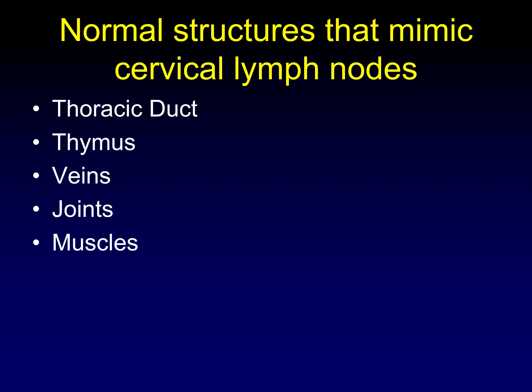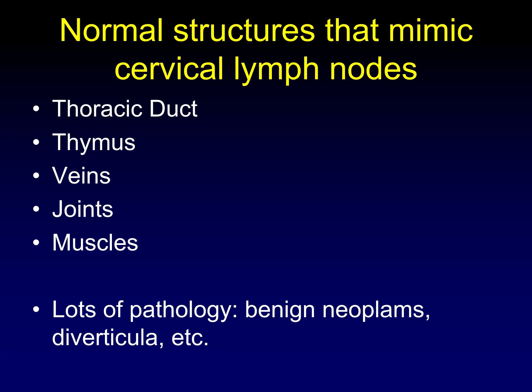To summarize, normal structures that can mimic cervical lymph nodes include: a dilated distal thoracic duct, visible in 50% of neck CTs; cervical thymus, which extends into the neck and can persist throughout adult life; veins, which are unpredictable and can crop up in unusual locations; degenerated joints, specifically the sternoclavicular joint; and muscles, particularly if hypertrophied or aberrant. There are also many pathologic masses that mimic nodal disease — schwannomas, paragangliomas, esophageal or tracheal diverticula — but today's focus was normal structures. Don't be fooled.